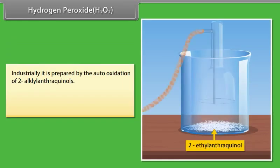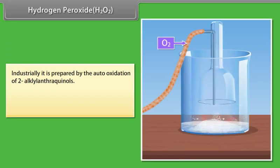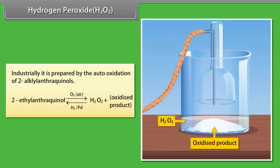Industrially, it is prepared by the auto-oxidation of 2-alkyl-anthraquinols. When 2-ethyl-anthraquinol is oxidized in the presence of hydrogen or palladium, it gives hydrogen peroxide.